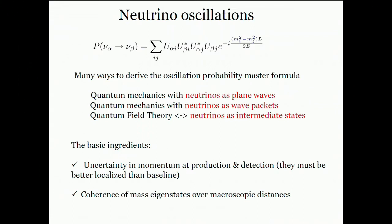The general master formula for the oscillation probability from neutrino alpha to neutrino beta is a superposition of sinusoidal oscillatory functions with wavelengths fixed by the neutrino mass squared differences and amplitudes depending on combinations of elements of the mixing matrix. There are many ways to derive this formula: one can treat neutrinos as plane waves and do simple quantum mechanics — the derivation seen in most textbooks — or consider neutrinos as wave packets and do quantum mechanics, or even go to quantum field theory where neutrinos are simply intermediate states. Fortunately the result is the same in all cases.